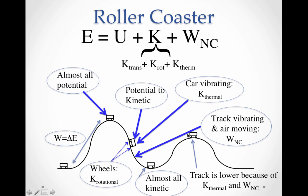That energy is not recoverable, and therefore the next hill has to be lower. The car is also moving at this point, so it has some kinetic energy that it didn't have at the top. So there's a little bit of energy that goes into those two areas and a little bit into kinetic energy, and then of course there is potential energy at the next hill as well.